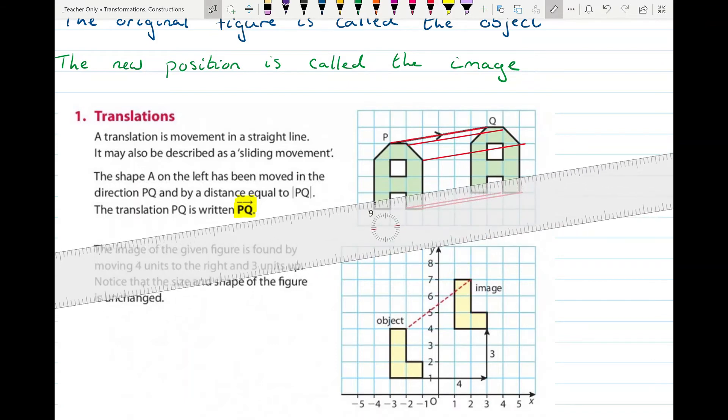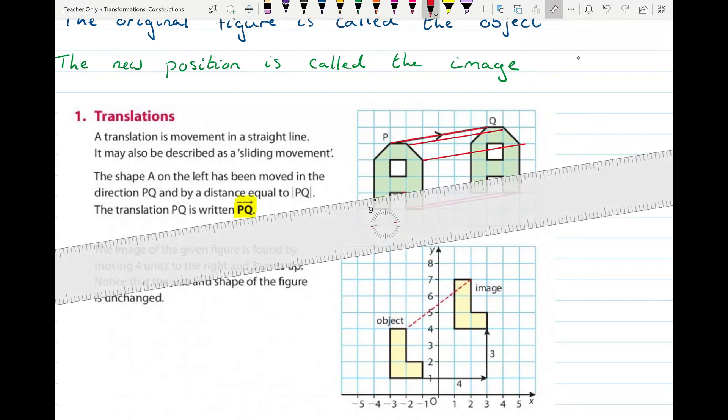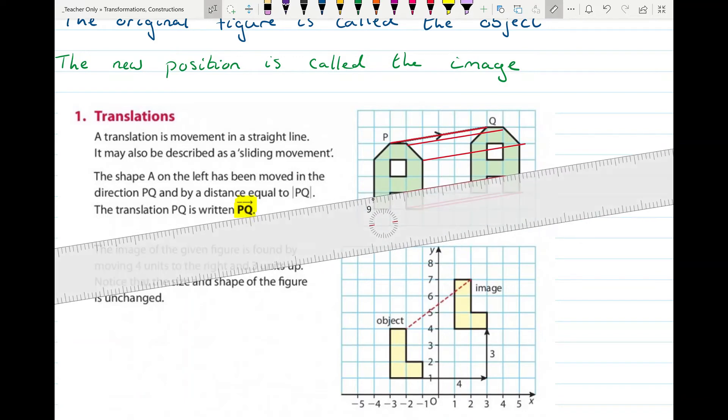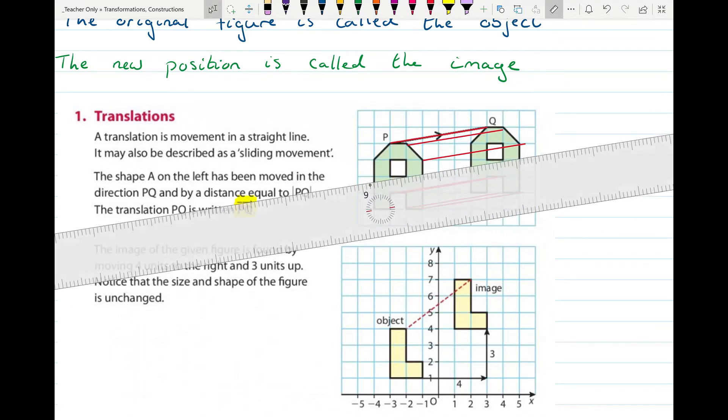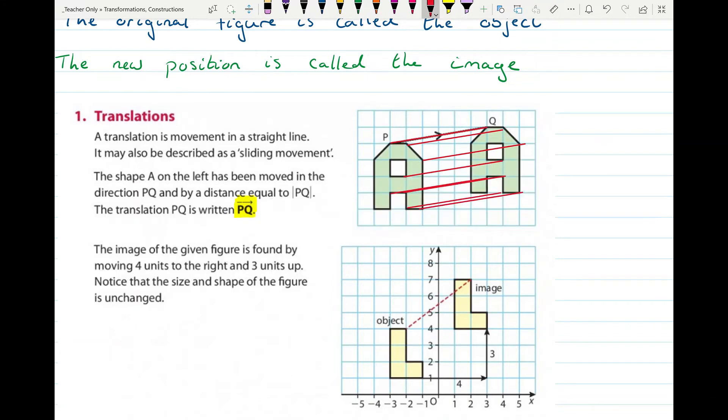And you can see how the entire shape is moving the same distance. It's all moving that same distance PQ and it's going at the same slant as P to Q. So that's the only piece of information we need in order to move the entire shape and map it from the object onto the image. So I could continue doing that and all those points would match up onto each other perfectly.